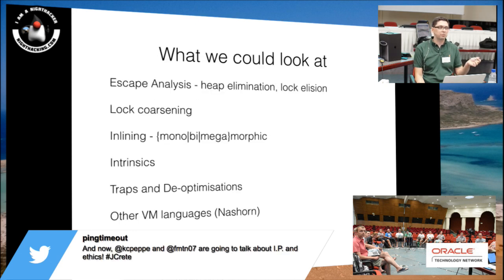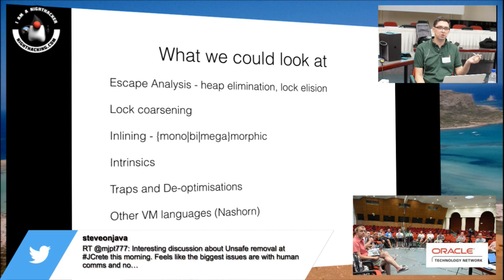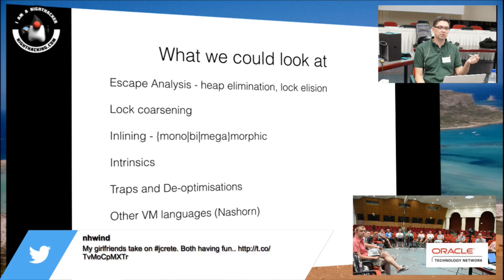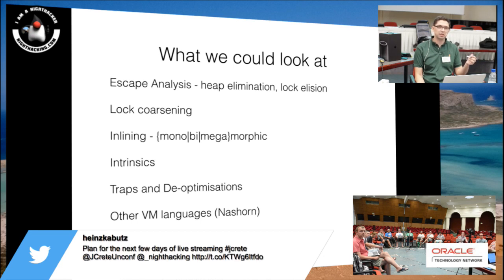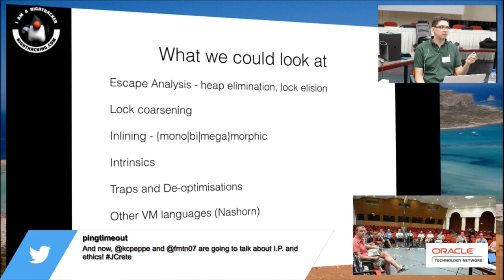Some topics we could cover in this session: escape analysis, a feature of the C2 compiler that can perform heap elimination and lock elision. We could look at lock coarsening, inlining and the various types of call sites that can and can't be inlined, intrinsics where the best known implementation of something is baked into the VM, what happens if an optimization goes wrong — traps and deoptimization — and if we've got time, other languages on the VM, perhaps Nashorn.